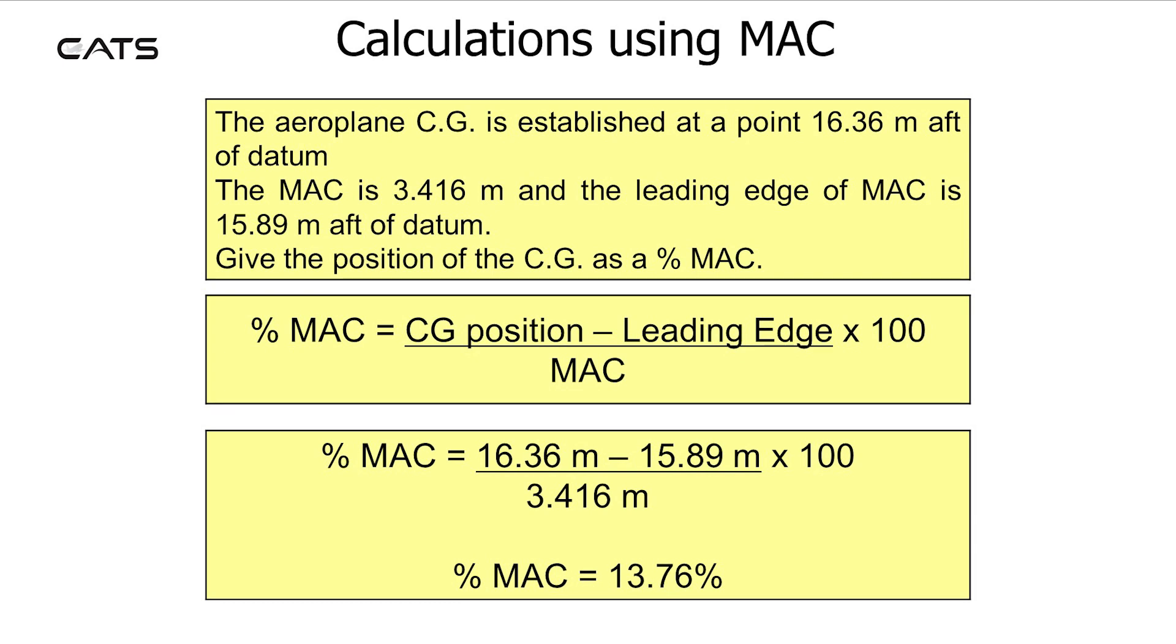Calculations using mean aerodynamic chord. The aeroplane CG is established at a point 16.36 meters after the datum. The mean aerodynamic chord is 3.416 meters and the leading edge of the mean aerodynamic chord is 15.89 meters after datum. Give the position of the CG as a percent mean aerodynamic chord.